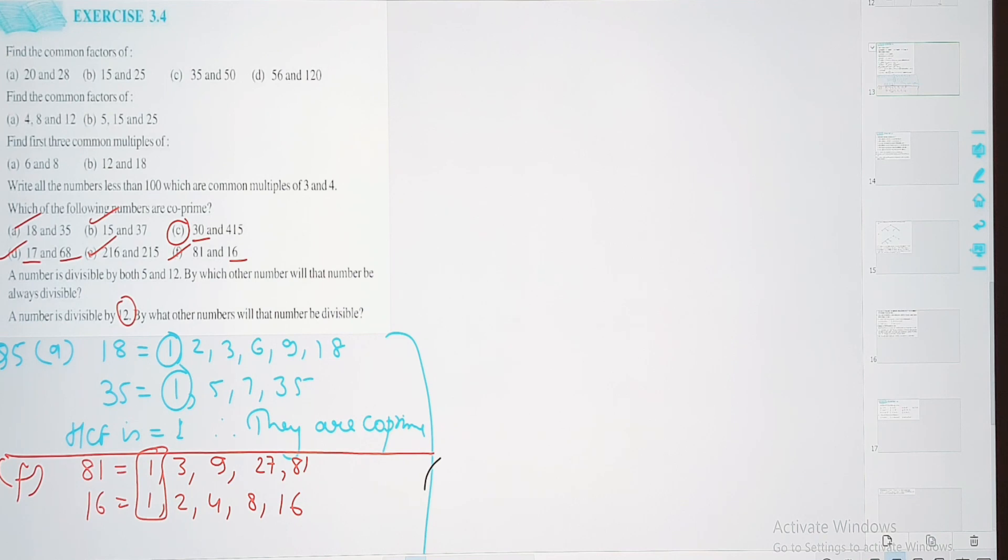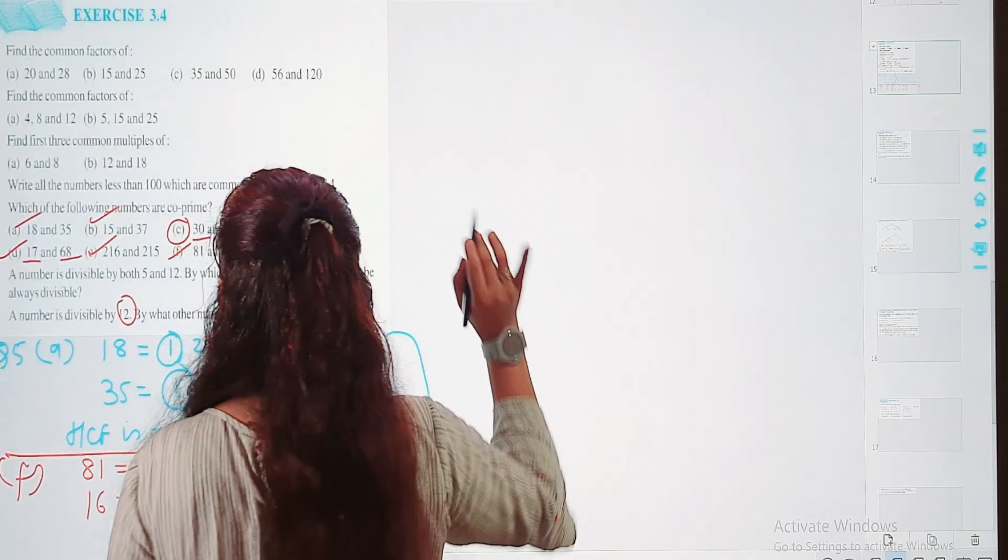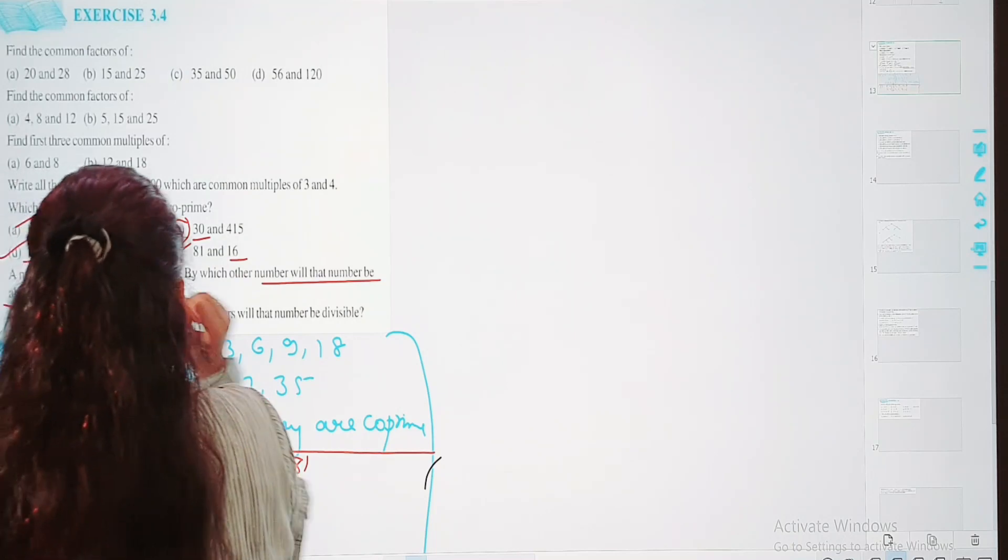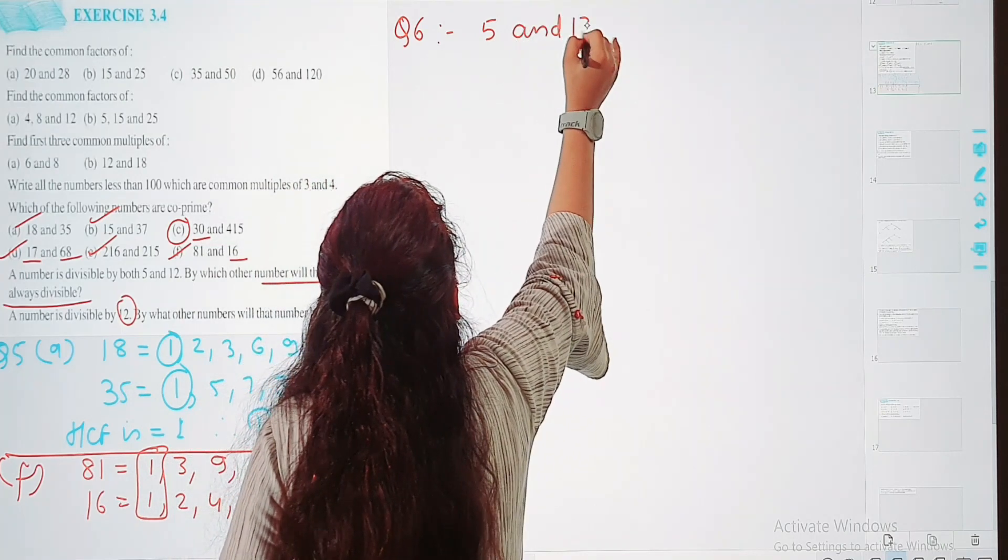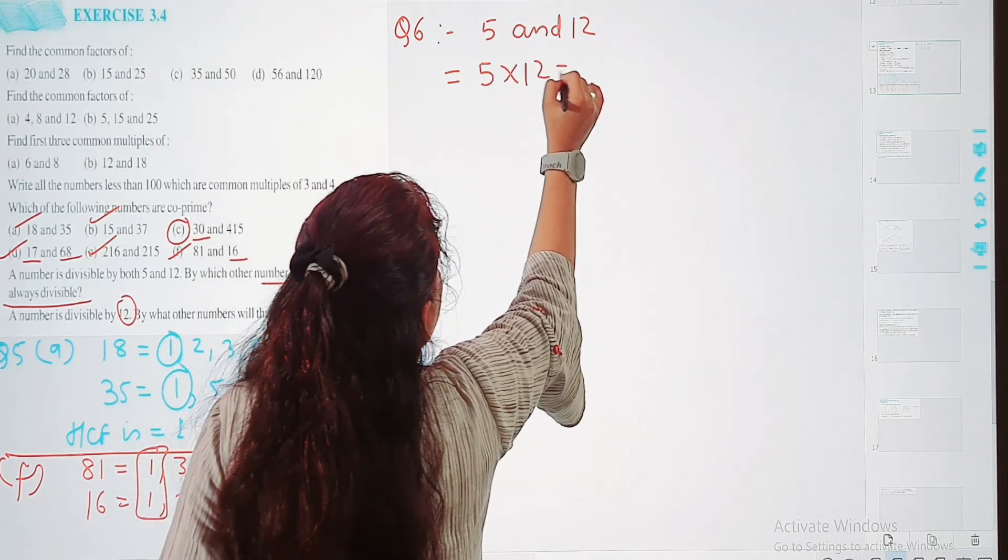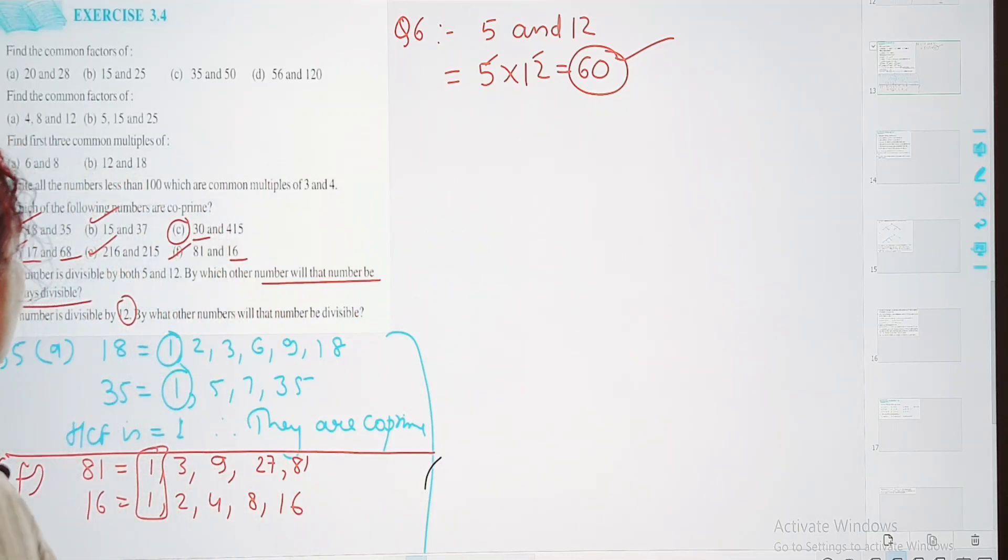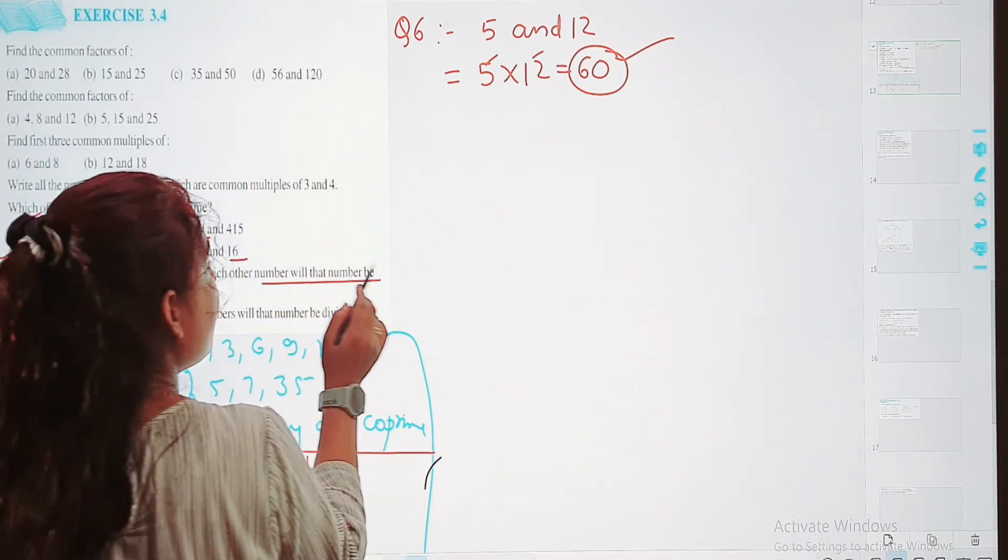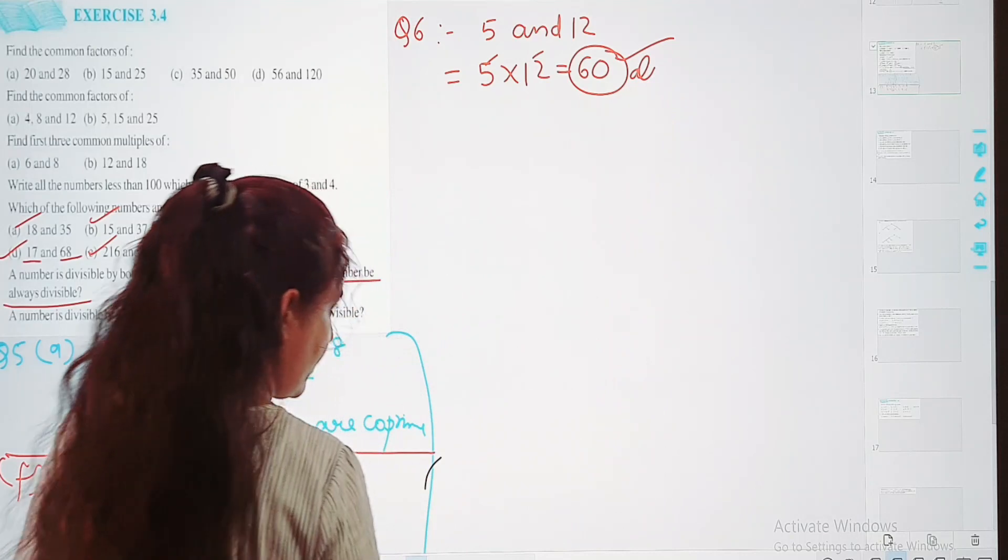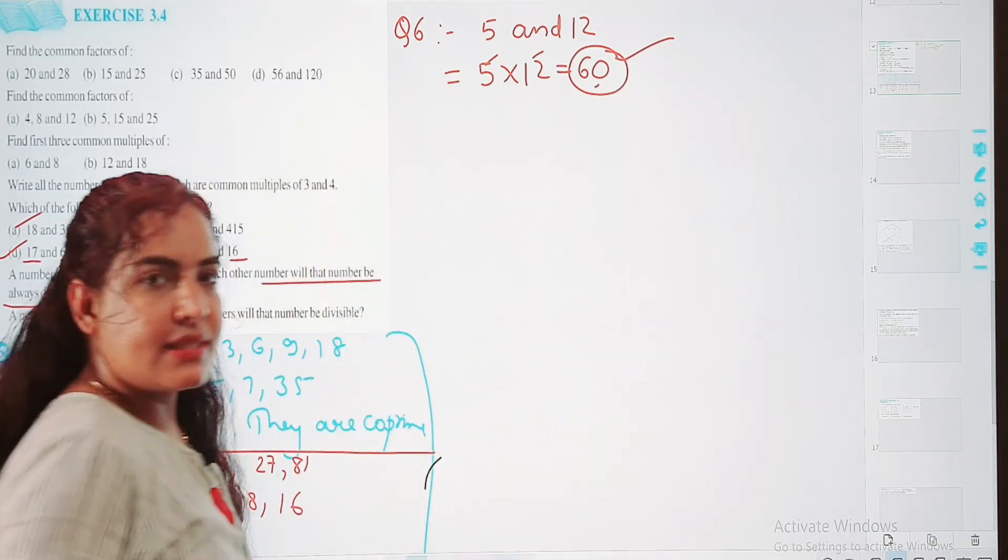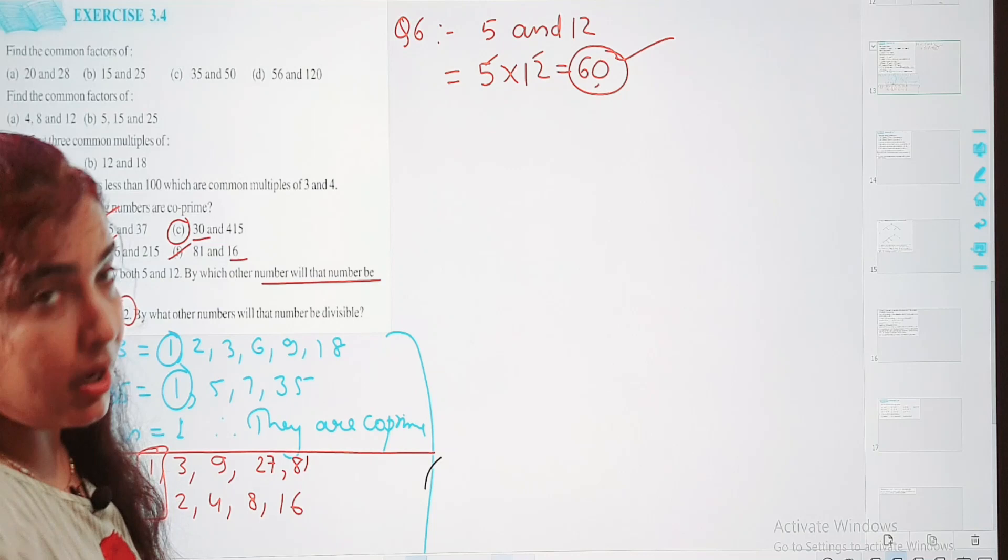To chaliyye start karte hai. Number which is divisible by both 5 and 12, by which number will that number be divisible always? Question number 6 me hai 5 and 12 ko aap kar dhenge multiply, aajayega 60. So joh bhi number in dho se multiply ho ga woh humeisha hi 60 se bhi multiply ho ga. By which other number will that number be always divisible? Always be divisible by 60. I hope samaj me aajayega, 12 or 5 se divisible ho ga woh humeisha hi 60 se bhi divisible ho ga.